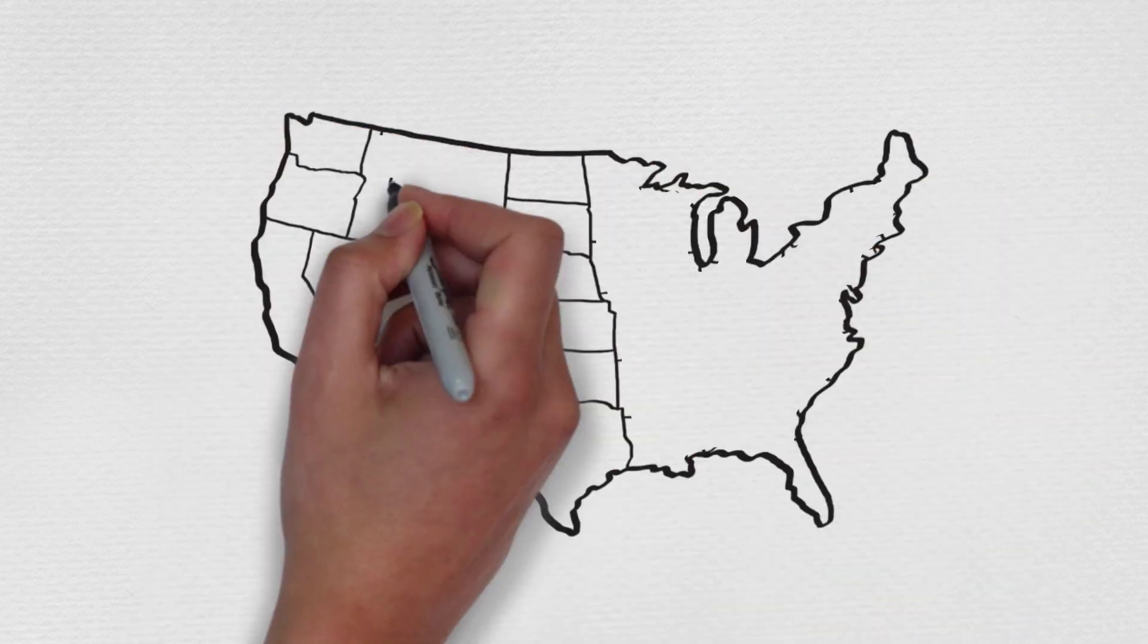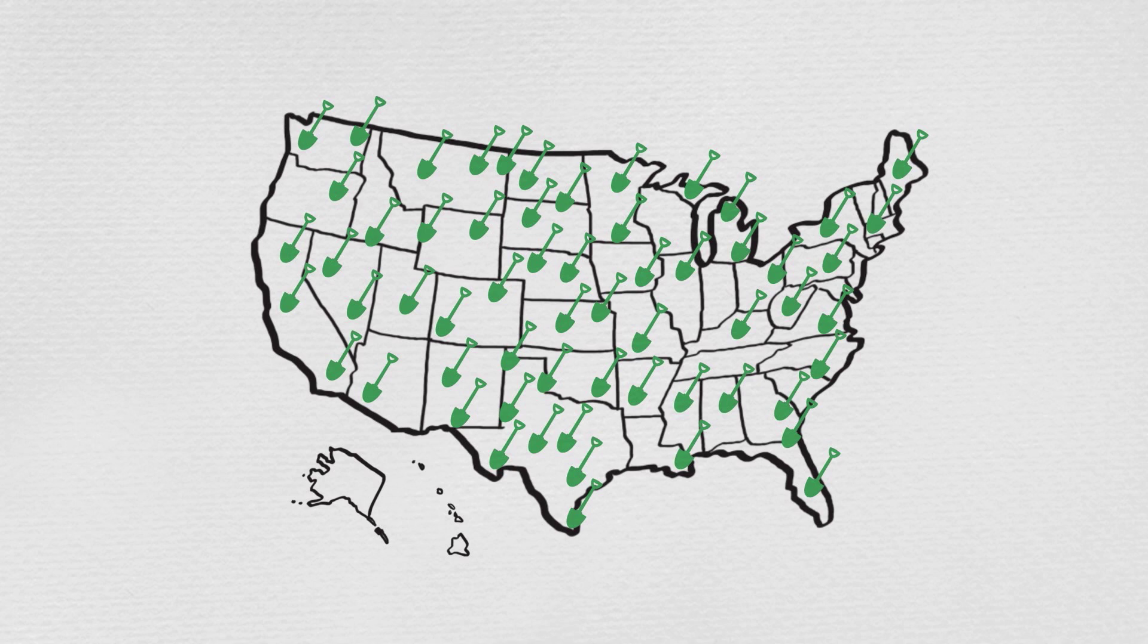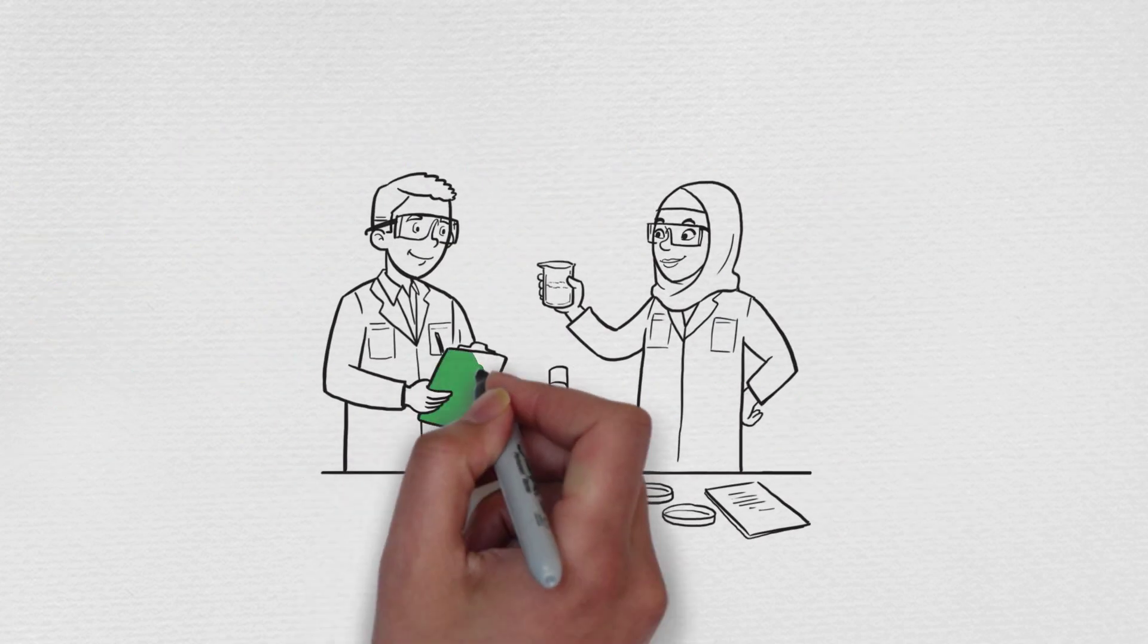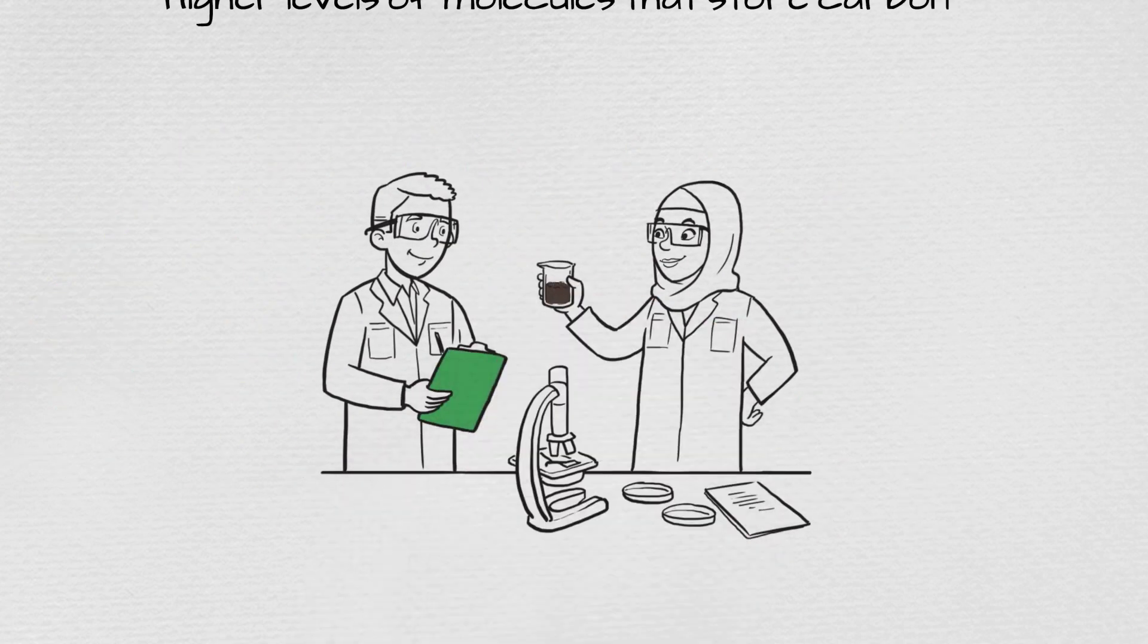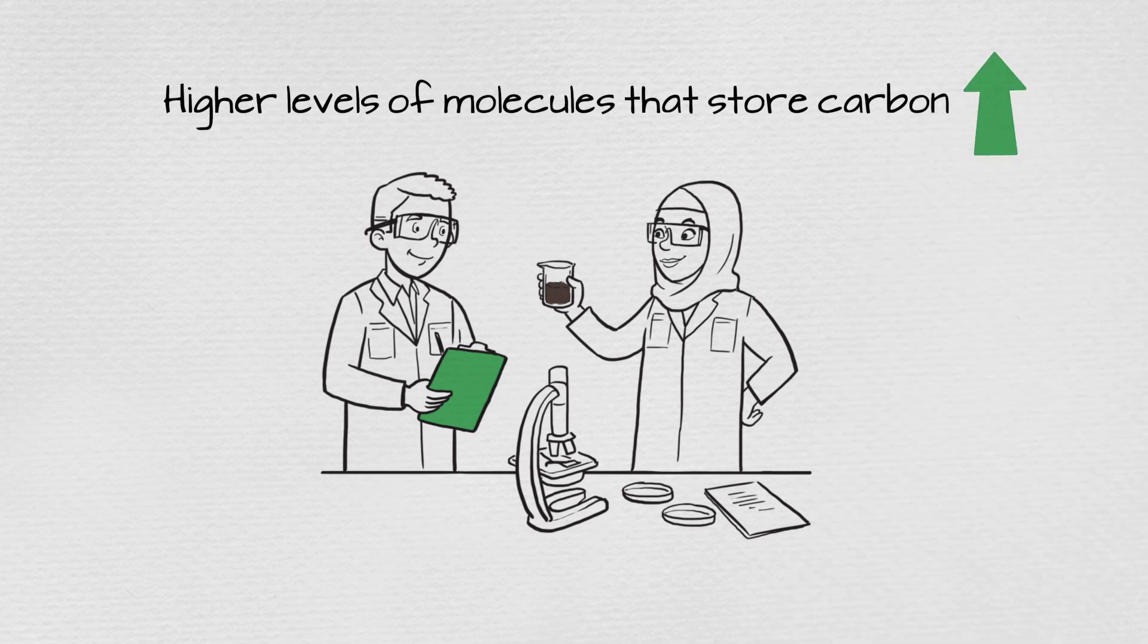Over a thousand farmer citizen scientists from around the country submitted soil samples. Researchers compared the soils from organic farms to those from conventional farms and found higher levels of molecules that store carbon for long periods of time in soils from organic farms.